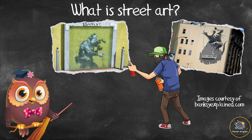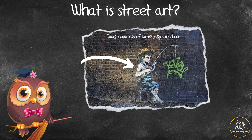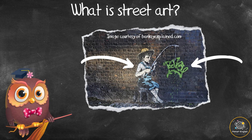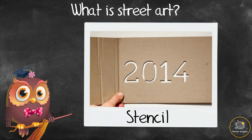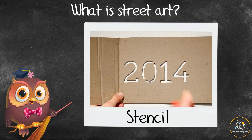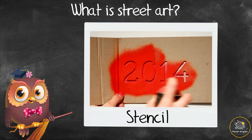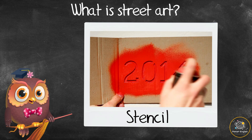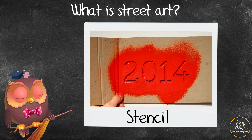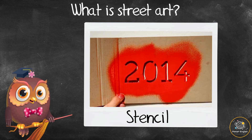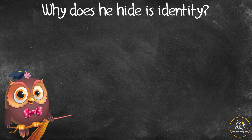Banksy paints on large areas like streets, walls of public buildings, and bridges. He combines images with graffiti using stencils and spray paint. A stencil is a thin sheet of cardboard, plastic, or metal with a picture, shape, or letters cut out of it.